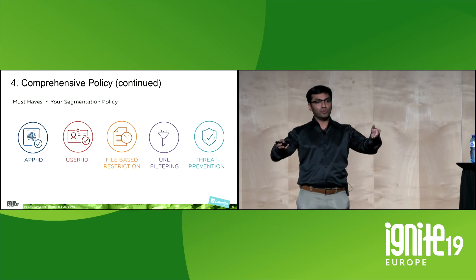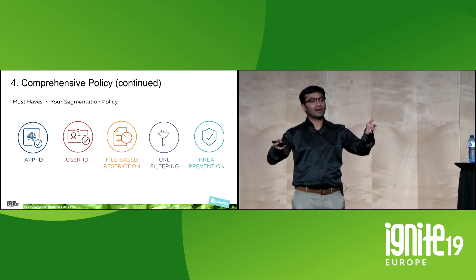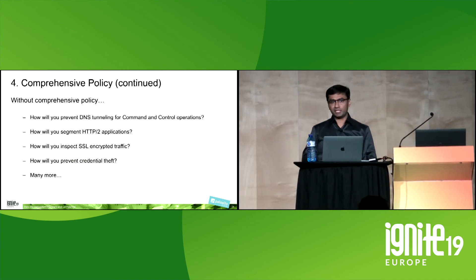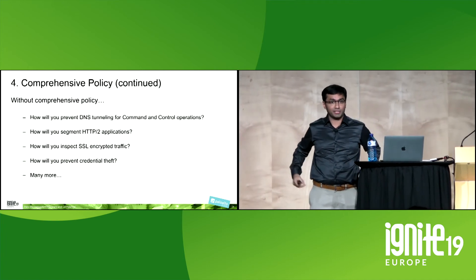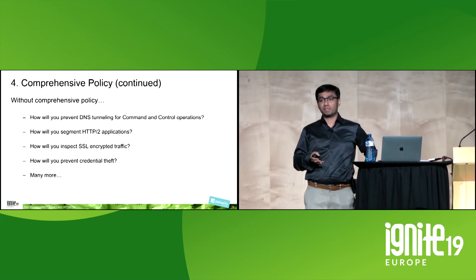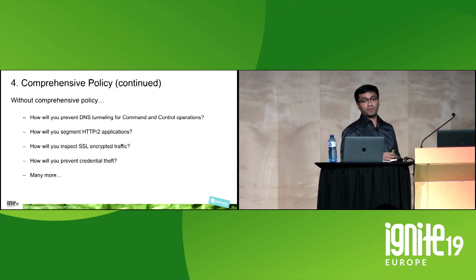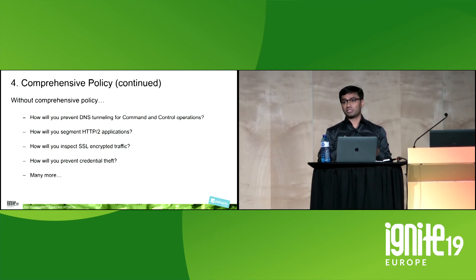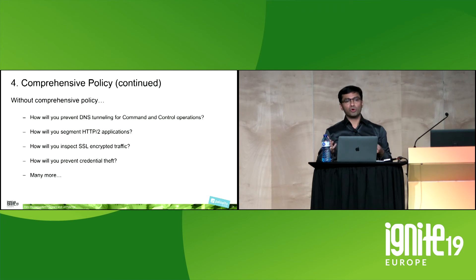If you don't write comprehensive policies in your micro-segmentation project, there are use cases that won't be solved: how will you prevent DNS tunneling for command and control operations? How will you segment HTTP/2 applications sharing the same port? If you keep writing layer 3–4 policies, different applications on the same port won't be differentiated. How will you inspect SSL-encrypted east-west traffic? How will you prevent credential theft? Writing a comprehensive policy addresses all of these.